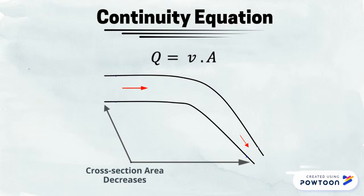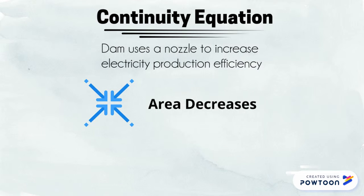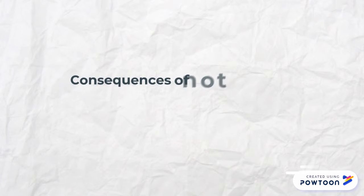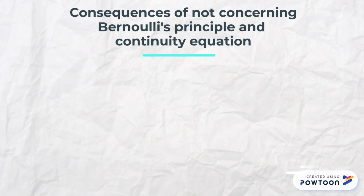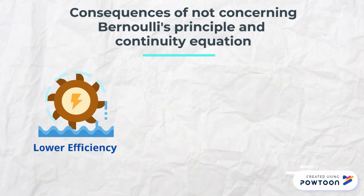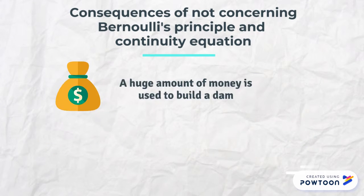According to the continuity equation, the product of the velocity of water flow and the area is always equal to the amount of water intake per time. In the dam, nozzles are used to decrease the area and produce a water jet which converts more kinetic energy to electricity. If Bernoulli's principle and the continuity equation are not considered during construction, the dam will likely have lower efficiency in electricity production — a huge economic loss given the large investments made in these projects.